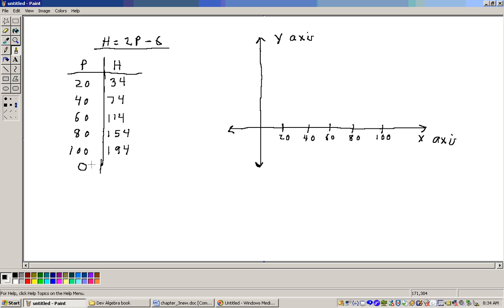Now, a good point to plot, I didn't ask you to, but it's worth it to do it, is put 0 in for the P right here. This is playing the role of your x variable, and this is playing the role of the y variable right here. So, if you put 0 in for P, we get 2 times 0 is 0. 0 minus 6 is minus 6.